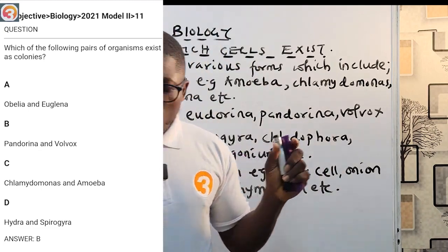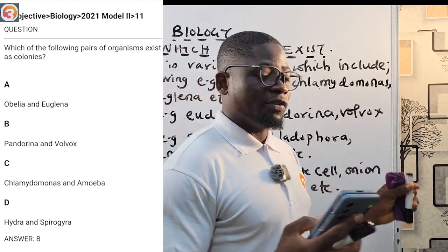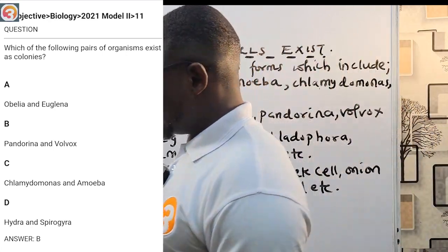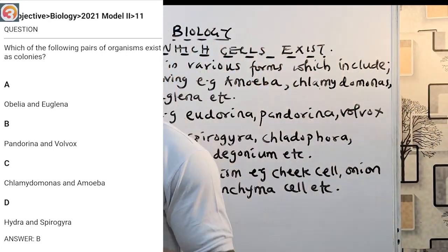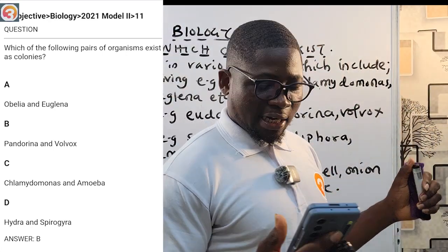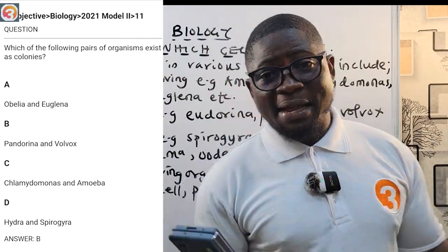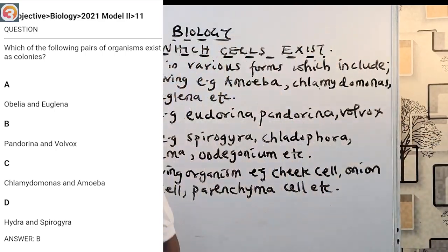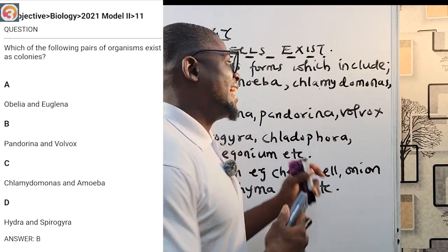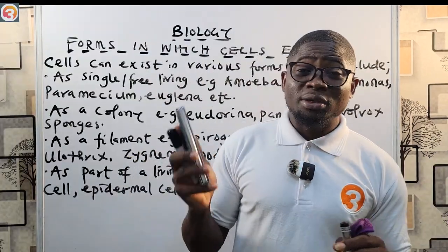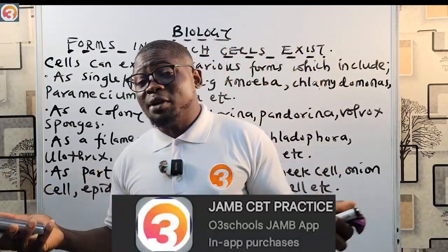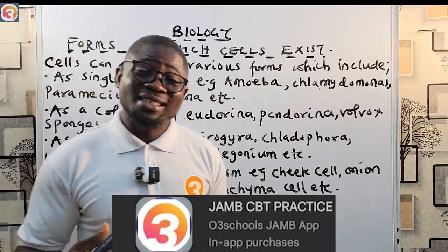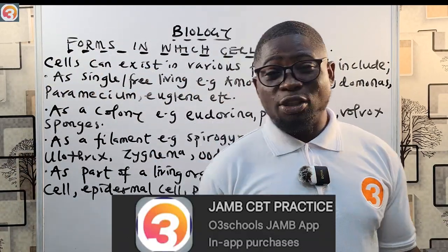The options are: A — Obelia and Euglena; B — Pandorina and Volvox; C — Chlamydomonas and Amoeba; D — Hydra and Spirogyra. I want to come back to this question at the end of class to show you that whatever we are doing is serious — it has been set in your exams and we are not here to play.